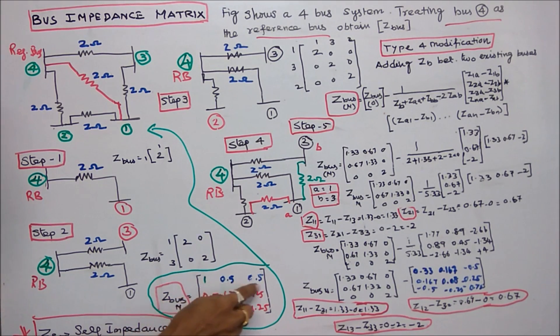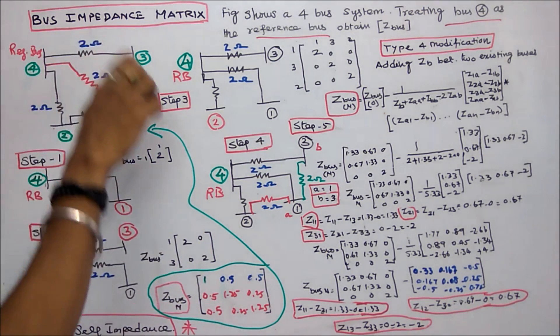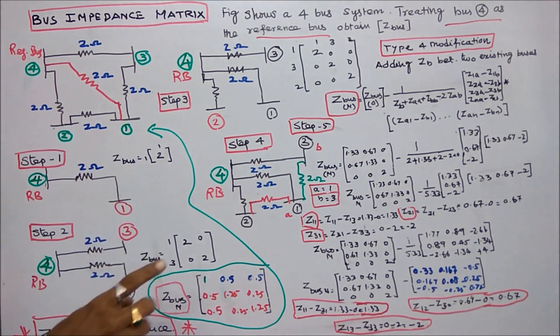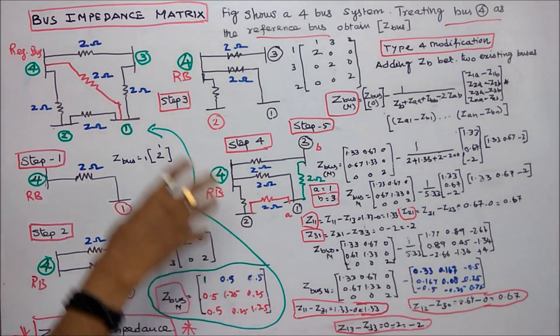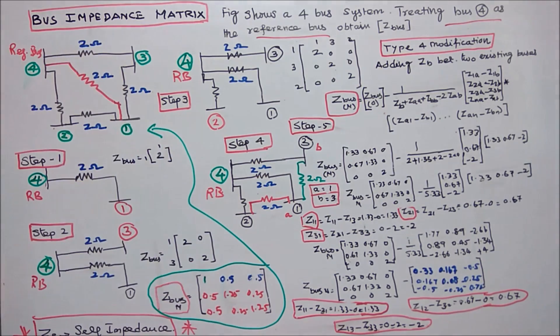1, 0.5, 0.5, 0.5, 1.25, 0.25. This is 0.5, 0.25, 1.25. The buses are 4, 1 bus is a reference bus. We got a 3 by 3 matrix. This matrix is the answer for this system.